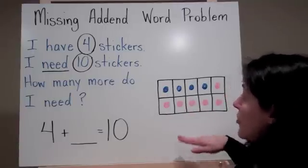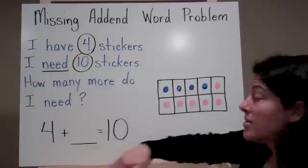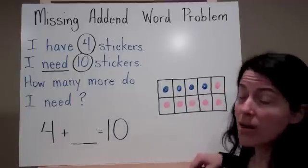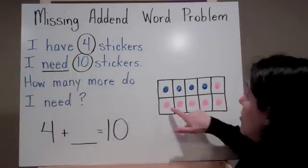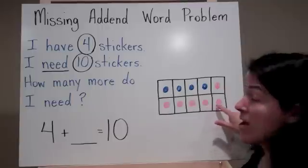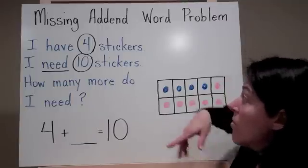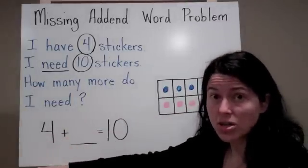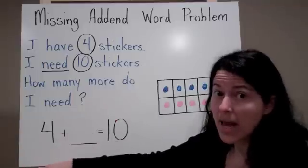Now my last step to figure out the missing addend is to count what I colored in after my known. 1, 2, 3, 4, 5, 6. So I know that I need 6 more stickers. That was the missing addend.